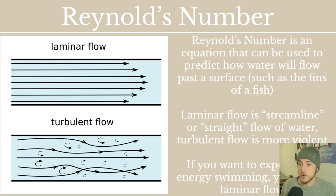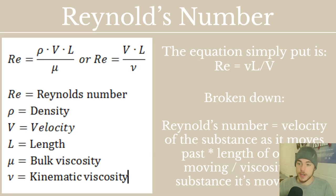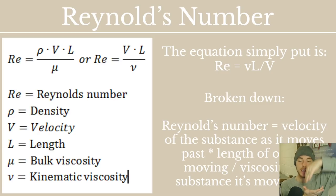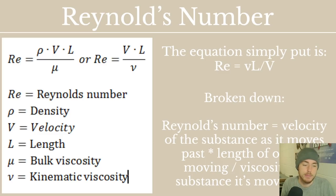So how do you get laminar flow to move by your body? That is what Reynolds number helps us determine. The Reynolds number equation is RE = VL / V. Broken down: Reynolds number equals the velocity of the substance as it moves past — the velocity of the water or the fish — times the length of the object moving, divided by the viscosity of the substance. Different water will have different viscosity, and that matters because something moving through a more or less thick substance would affect the Reynolds number.